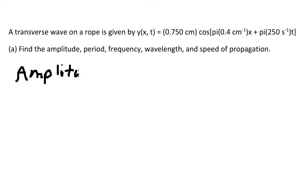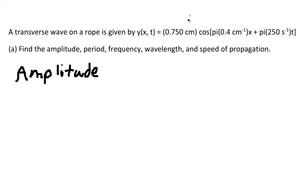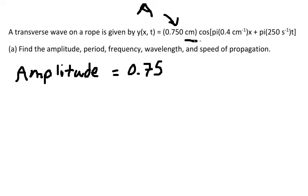To find the amplitude, we need to concentrate on the number next to the cosine — that is the amplitude. We put 0.75 centimeters because we have the unit given here. We can also convert this into meters.